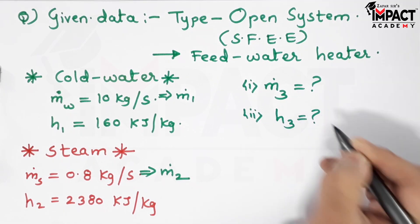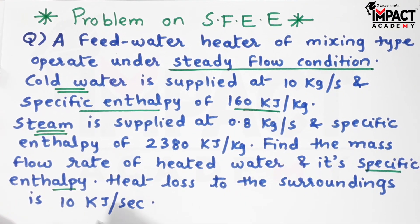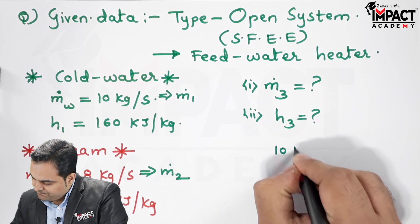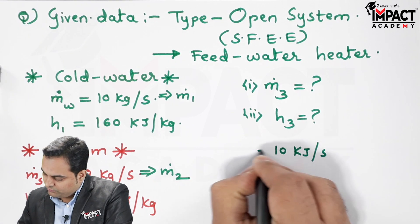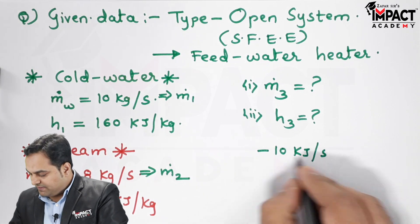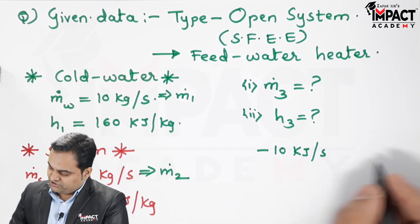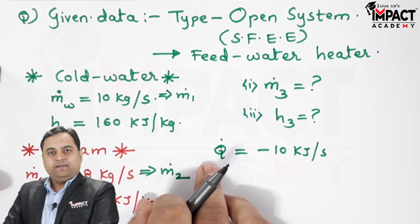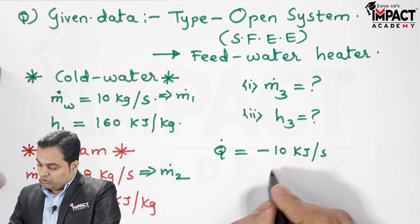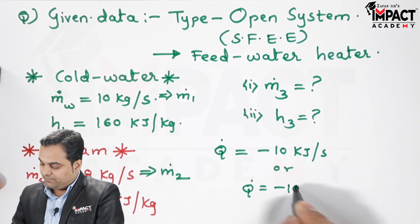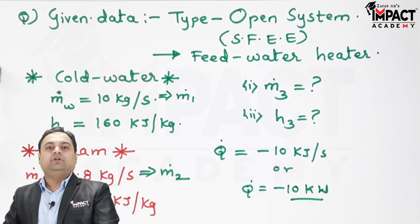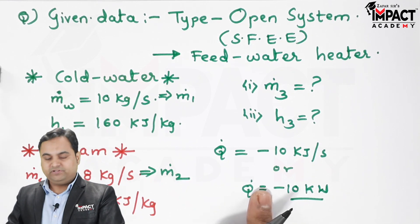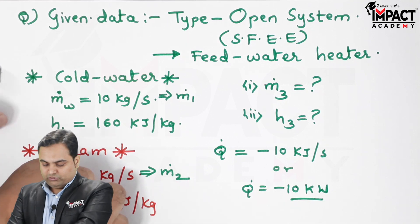The heat lost to the surroundings is 10 kilojoule per second. Since heat is lost, it is denoted with a negative sign: q_dot equals minus 10 kilojoule per second. The dot notation indicates it is based upon time. In thermodynamics, whenever heat is added it is treated as positive, and whenever heat is lost it is denoted with a negative sign.